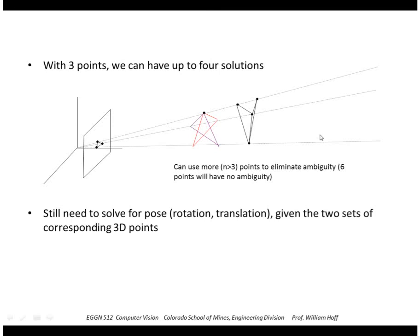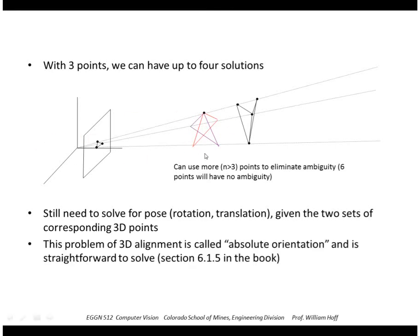The result of solving the P3P problem, assuming we've eliminated the ambiguity, is that we've solved for the distance to these points in the model and therefore the positions of the points in the camera's coordinate system. We still need to solve for the pose of the object in the camera's coordinate system. That requires computing the transformation between two sets of 3D points: the points in the model's coordinate system and the points in the camera's coordinate system. That algorithm is called the absolute orientation algorithm.